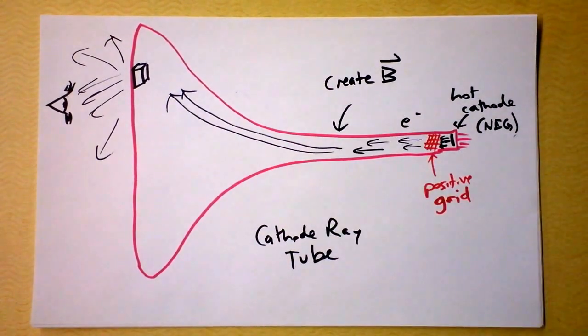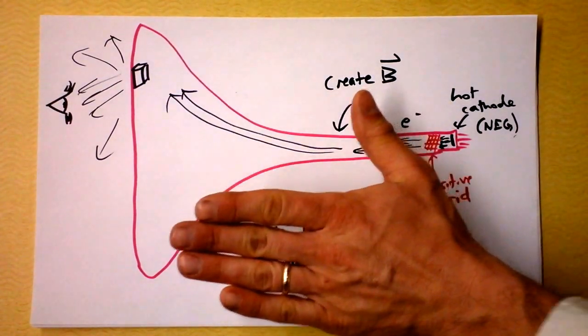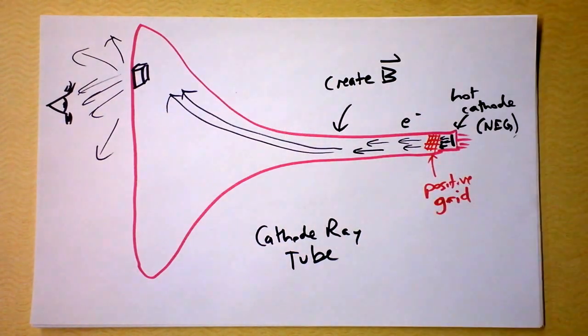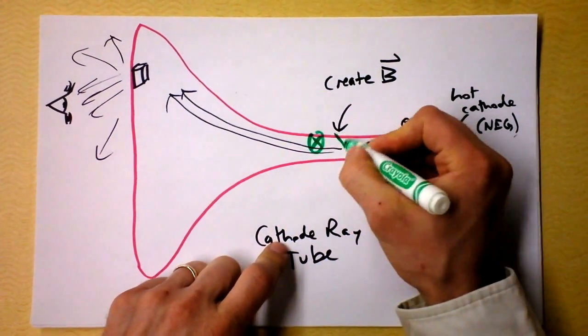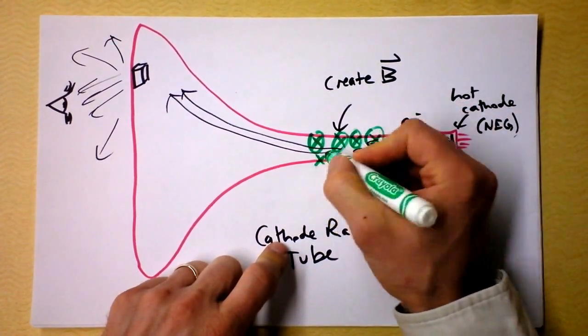I guess if I had electrons going this way, and I want their force to be upward, I just need the magnetic field to go into the page. So my magnetic field, I think I started this convention where my magnetic field is going to be green. If my magnetic field is into the page.